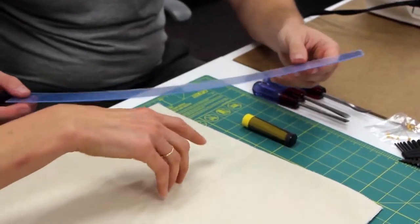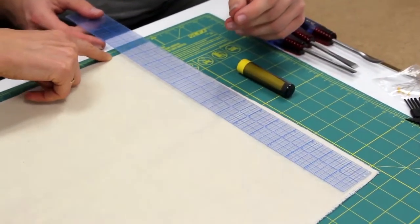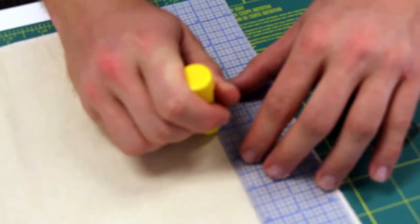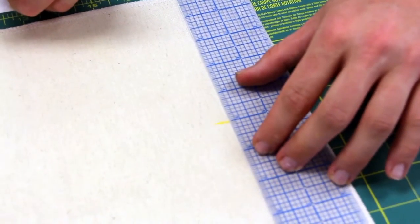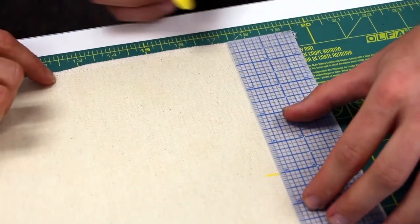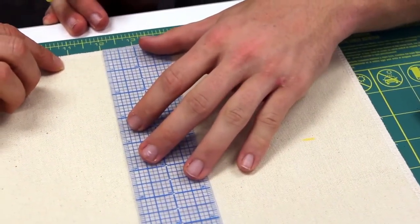Dylan, can you take your ruler? Excellent. Can you measure from the bottom up five inches? And then what I want you to do, we're going to want to create a straight line. If you could come to the middle of your piece and measure up five inches again.